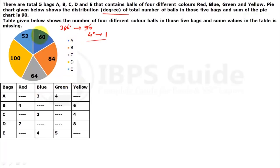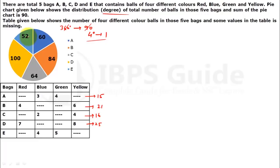Now let's talk about A — how much is it? 60 degrees. When we talk about A at 60 degrees, how much is it? 15 balls. Now let's talk about B: 84 degrees, so 84 divided by 4 gives 21 balls. In C, 64 degrees gives 16. And if you want to make 100, 25 and 25 — so the total for D is 25. And then last, what was it? 52 degrees, which gives 13. So here it will be total, but here it will be 2 blanks according to the question.